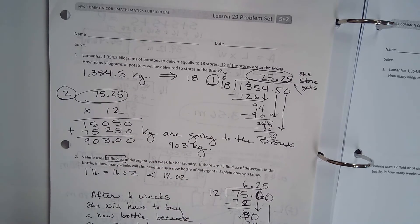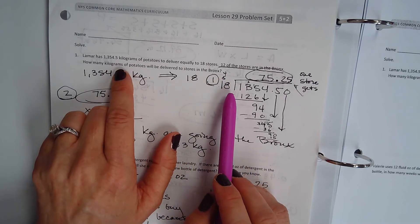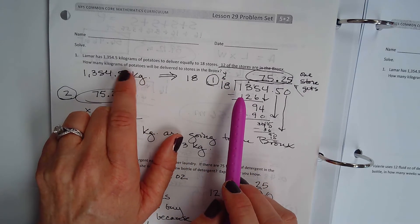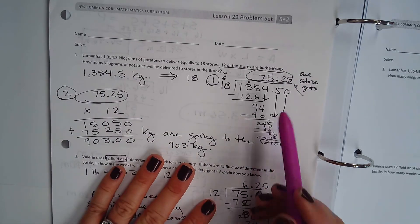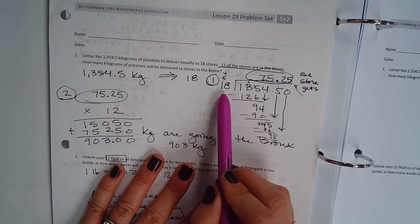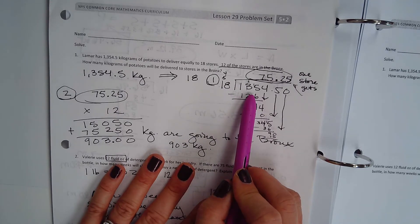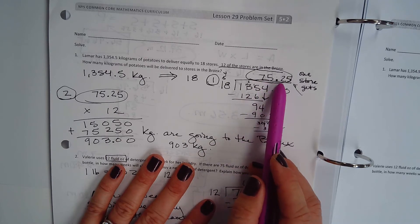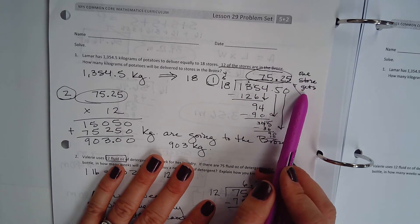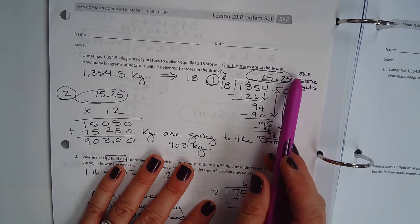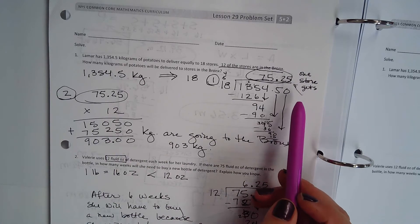So we know that 1,354.5 kilograms have to go to 18 stores. So what's our step one? First we need to divide 18 stores into the total amount of potatoes and we get 75.25 pounds of potatoes. One store gets 75.25 pounds of potatoes.